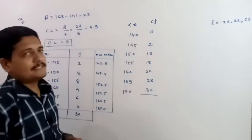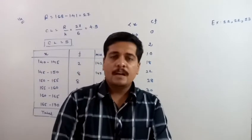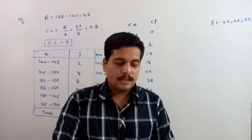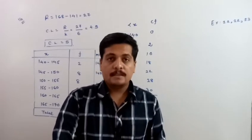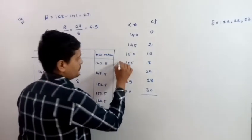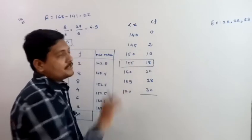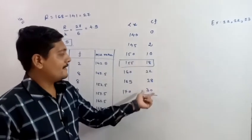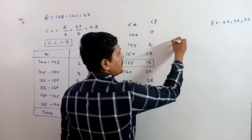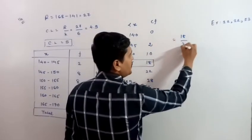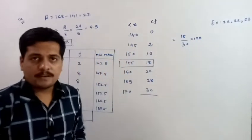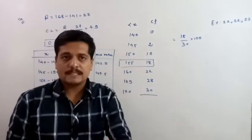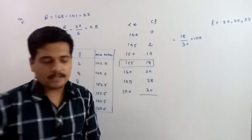So there is no problem with the less than type cumulative frequency distribution. The question also asks: how many percentage of people have height less than 155? The CF value less than 155 is 18, and total is 30. So percentage = 18 ÷ 30 × 100 = 60%.